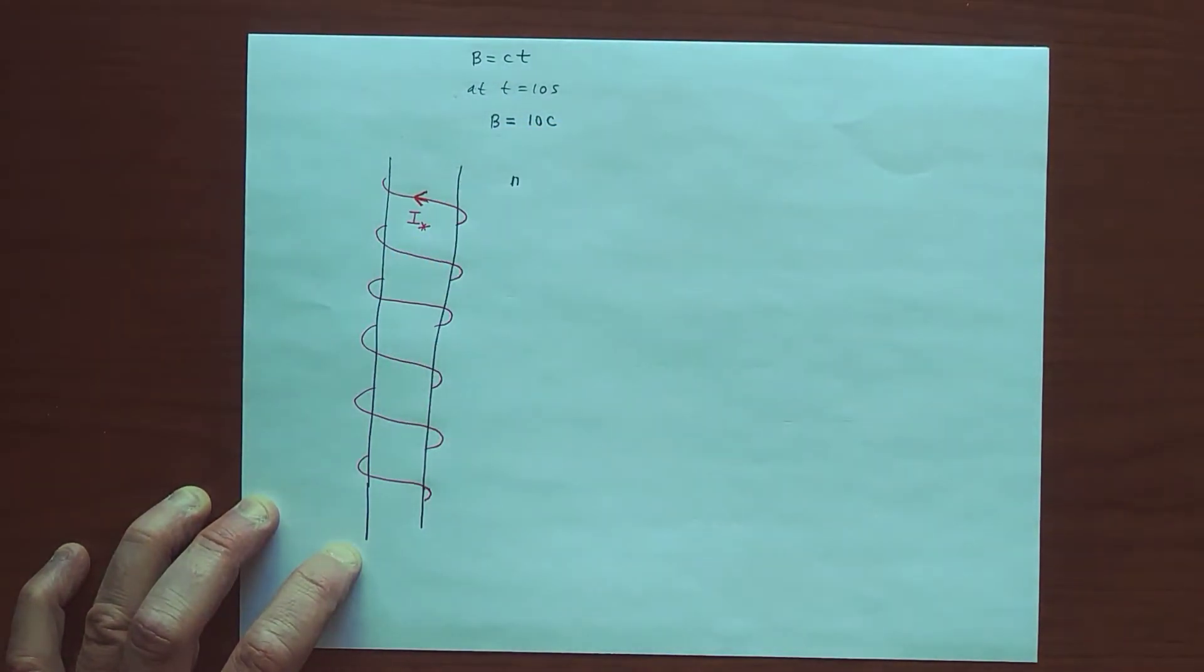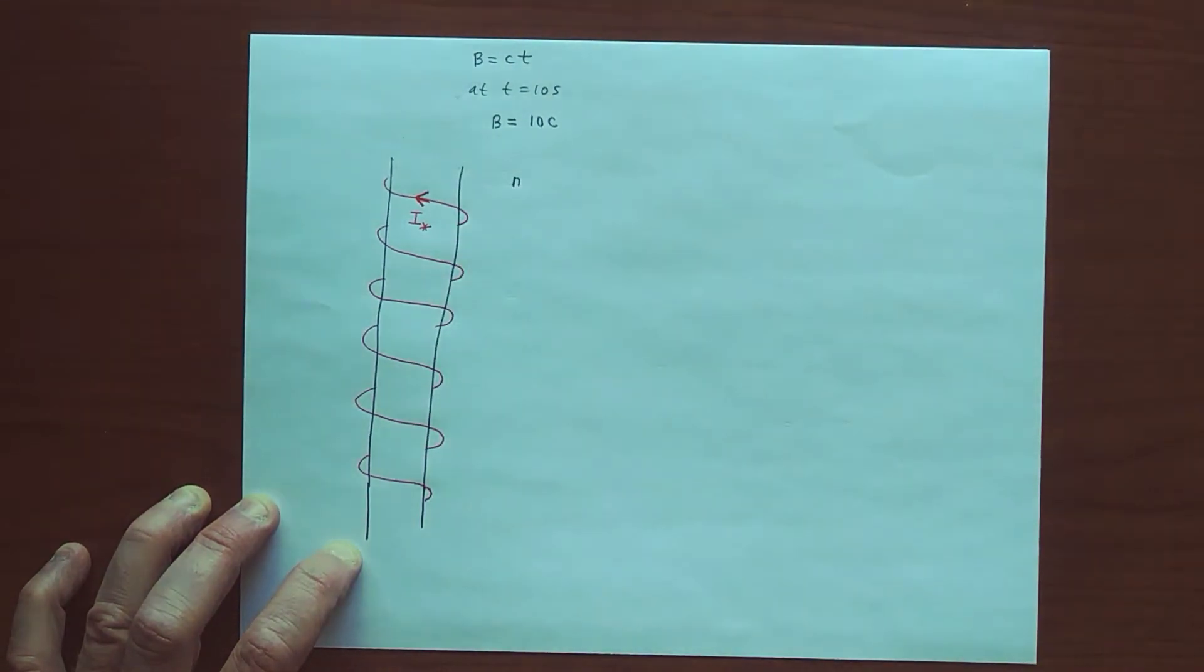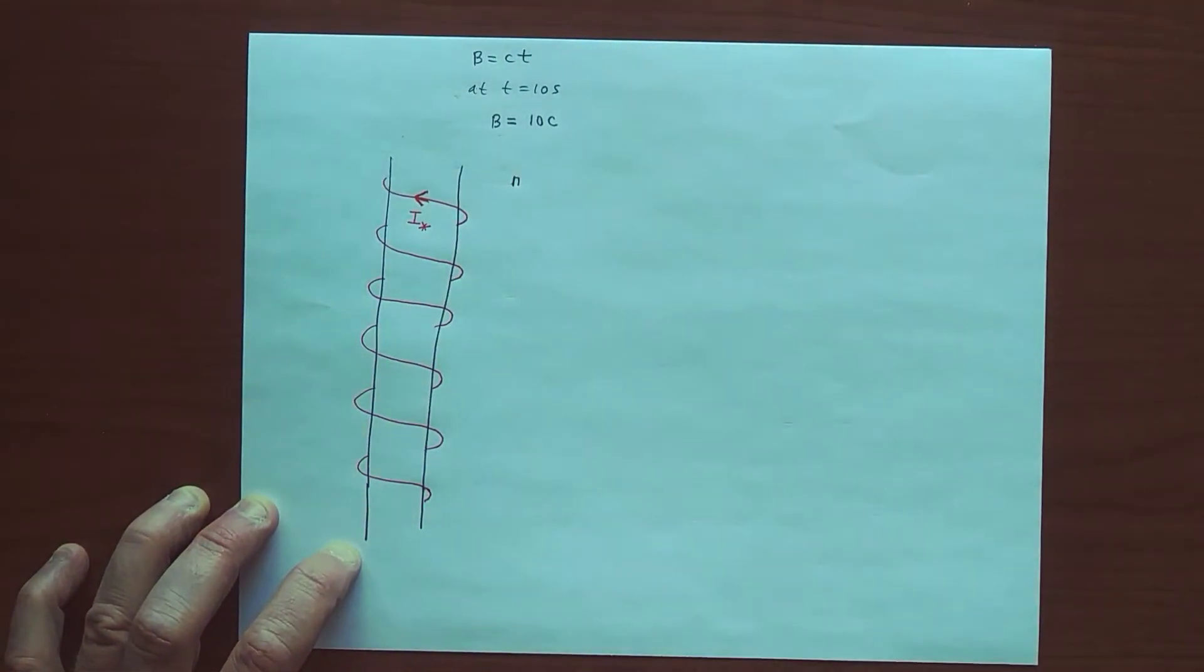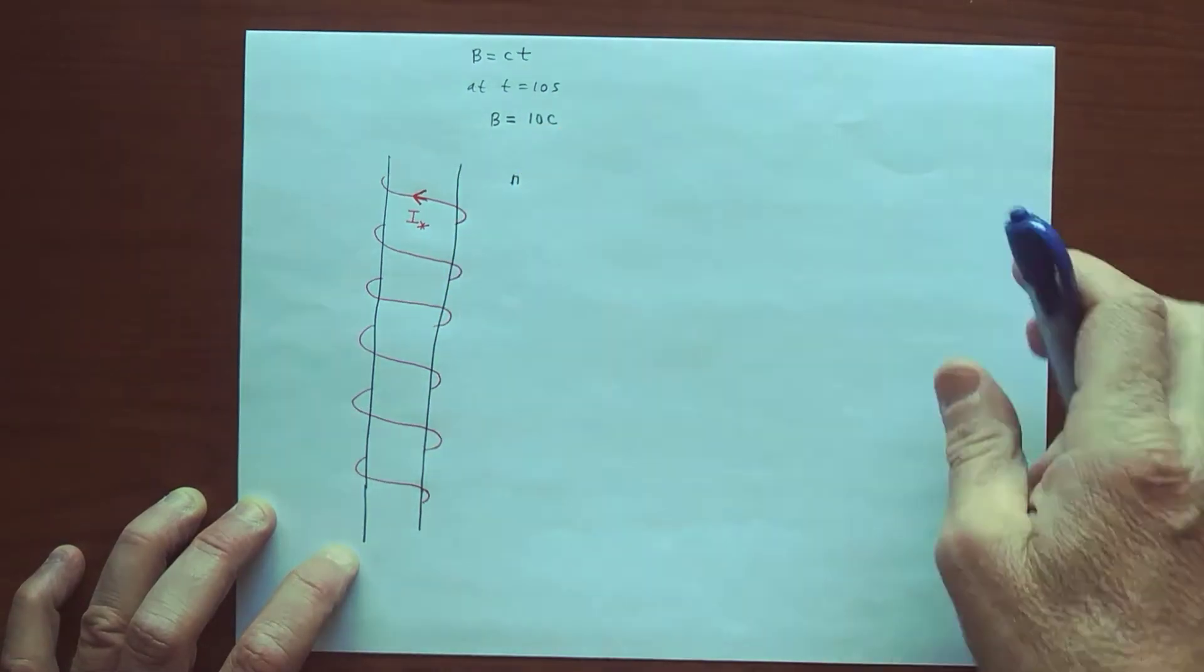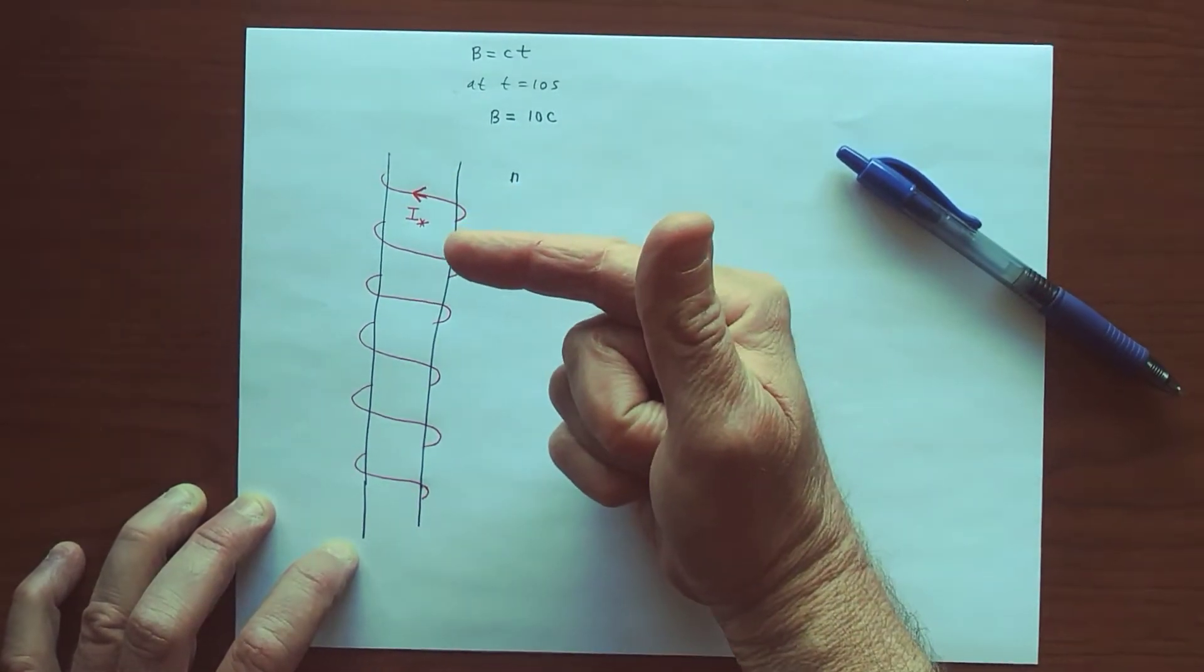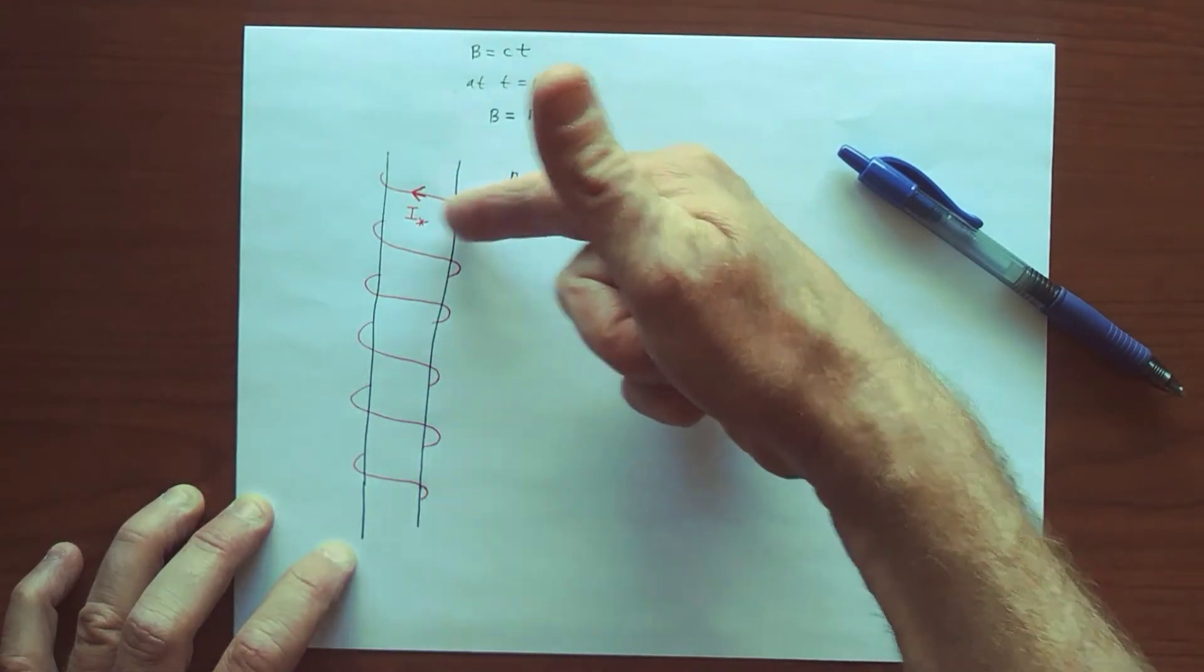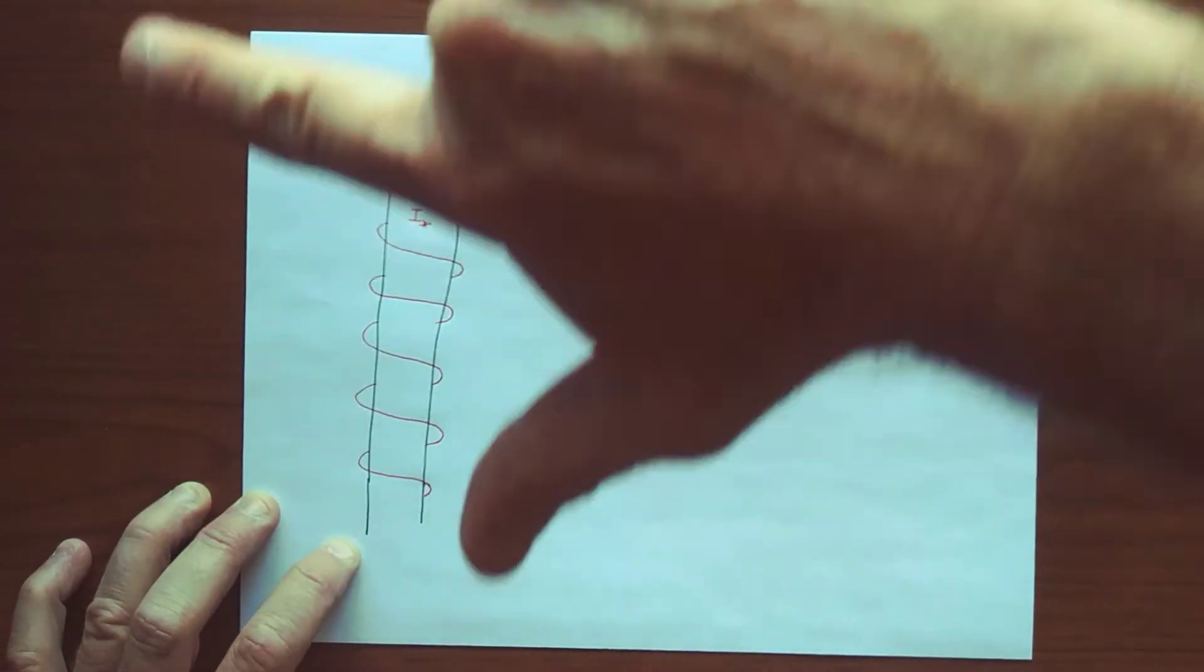Through the solenoid, and we have n turns per unit length and current i star going through here. So we know that the field inside here, let's make it blue. So we know that the field in here is along the axis of the solenoid from the Biot-Savart law.